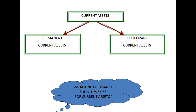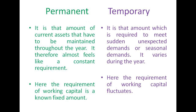When we use the word current assets, we divide it into two parts: permanent current assets and temporary current assets. As a finance manager, our job is to understand what kind of finance should we use for current assets. Although current assets have a period of less than one year, permanent current assets is that amount which has to be maintained throughout the year — it is almost a constant requirement. Temporary current assets is the amount required to meet sudden unexpected demands or seasonal variations, so this can fluctuate throughout the year.